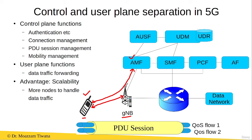This direct signaling link passes through the gNB. And we can see that there is no other direct signaling link between the user equipment and any other network function in the 5G network.